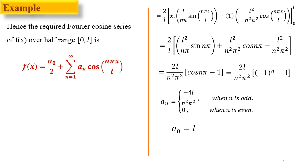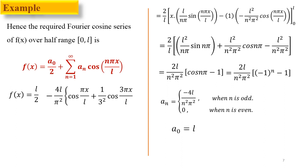For odd values of n we have aₙ = −4L/n²π², so the Fourier cosine series is: f(x) = L/2 − (4L/π²)[cos(πx/L) + (1/3²)cos(3πx/L) + ...]. Taking the odd terms only, this is our required half-range Fourier cosine series.